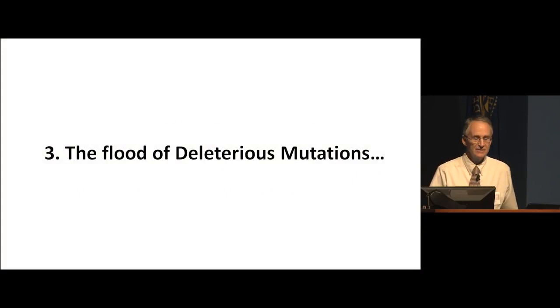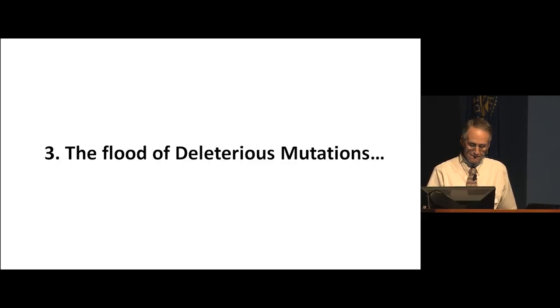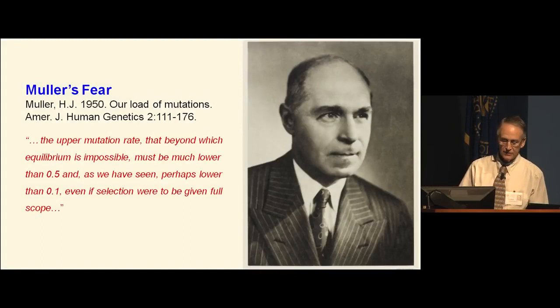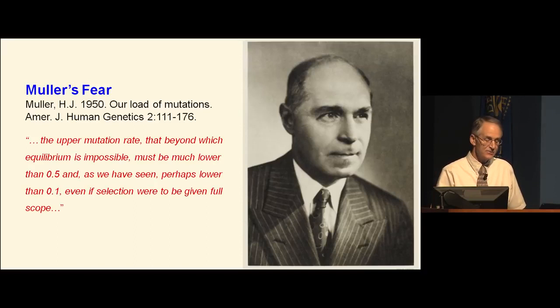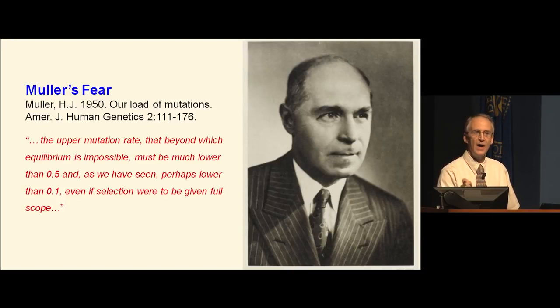The third issue is the flood of deleterious mutations pouring into the human population. If the mutation rate is too high, natural selection cannot remove mutations as fast as they arise. Mueller, in his 1950 paper 'Our Load of Mutations,' was very concerned that we were near the tipping point. He wrote that the critical mutation rate — beyond which equilibrium is impossible — must be much lower than 0.5, meaning half a mutation per person per generation is already too high. It might even be as low as 0.1, even if selection were given full scope.